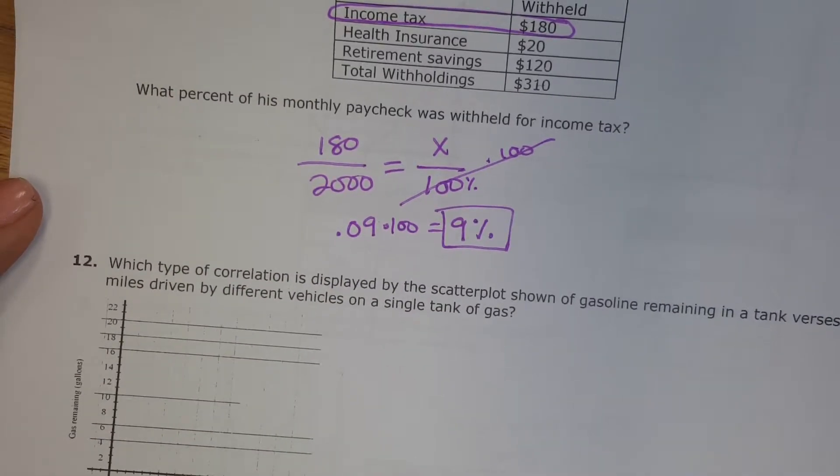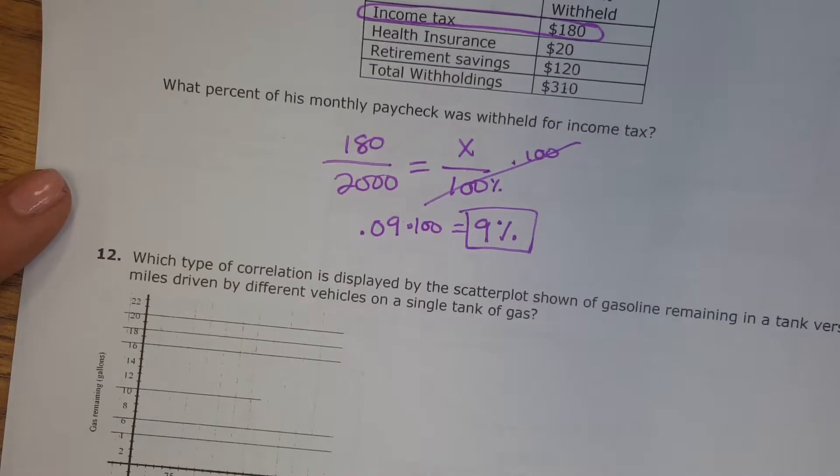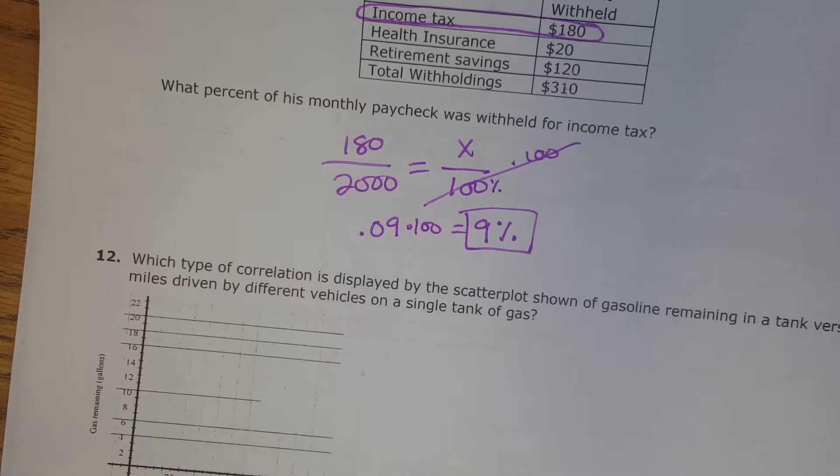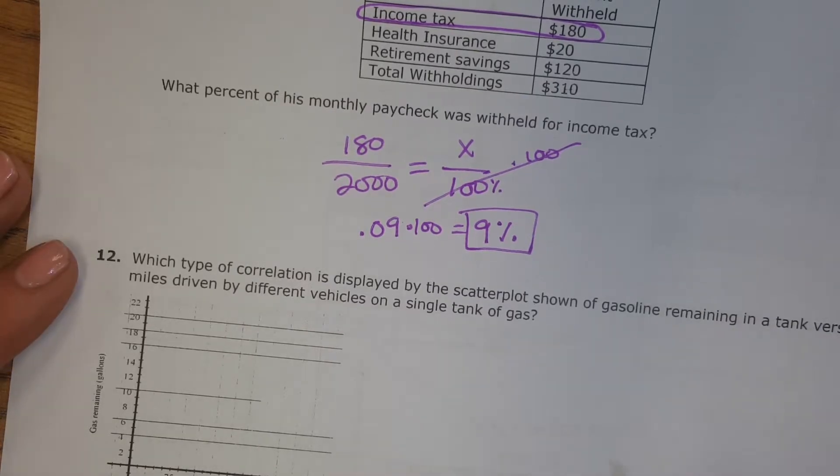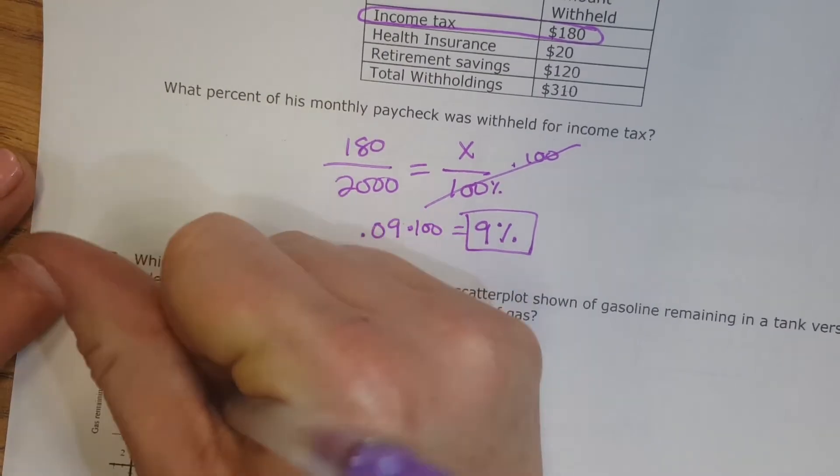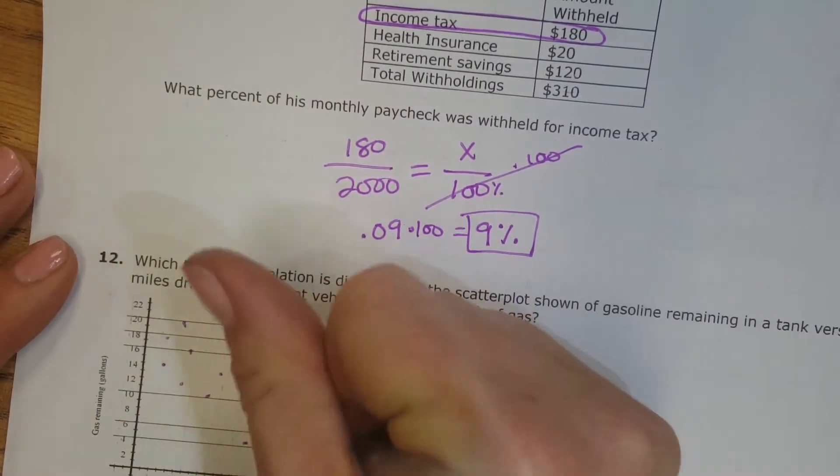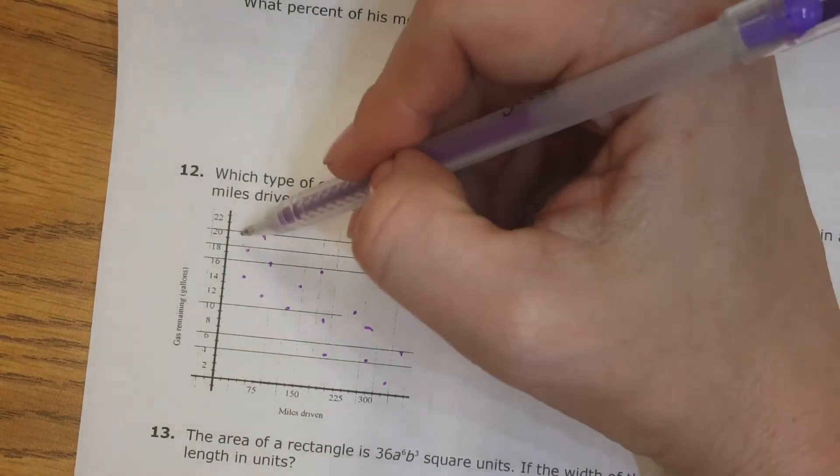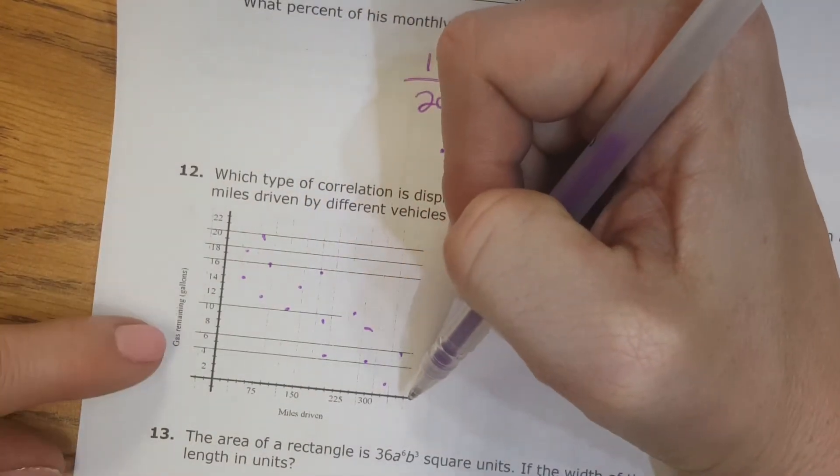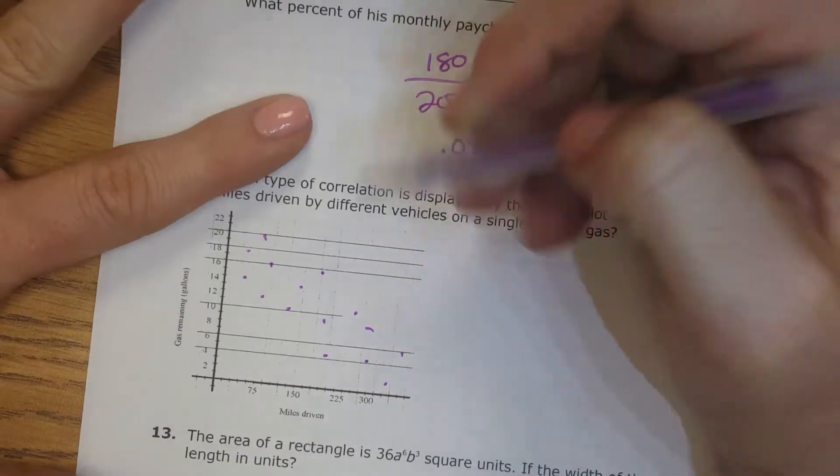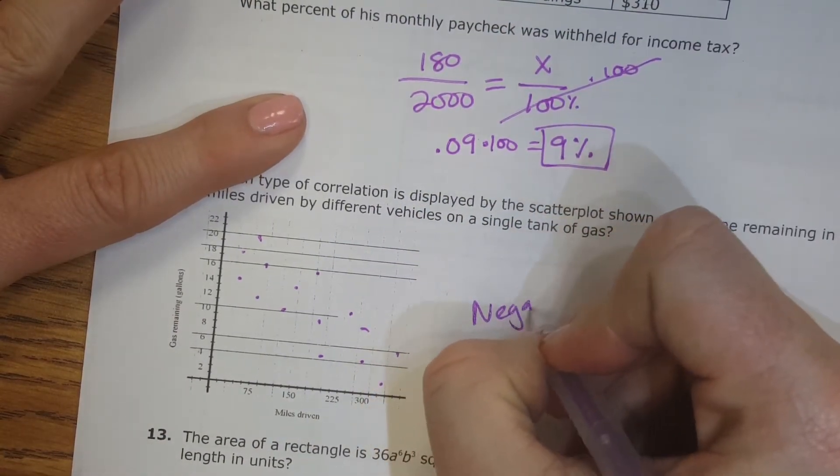Number 12, which type of correlation is displayed by the scatterplot shown of gasoline remaining in tank versus miles driven by different vehicles on a single tank of gas? So you can't really see the points, so I'm going to put them on here. Okay, so there's your points. This trend is going down. As the miles gets bigger, the gas remaining gets lower. So this is negative correlation.